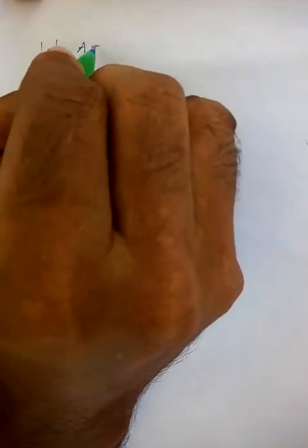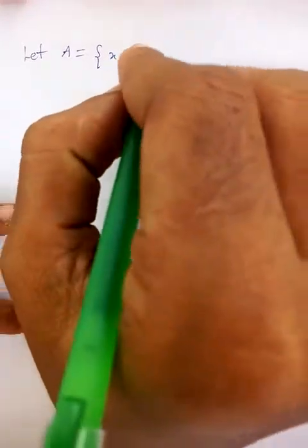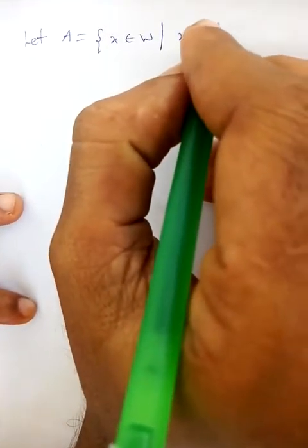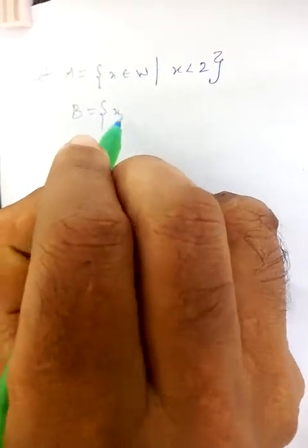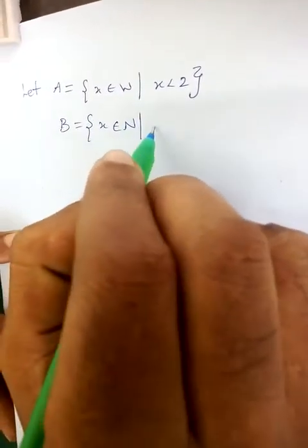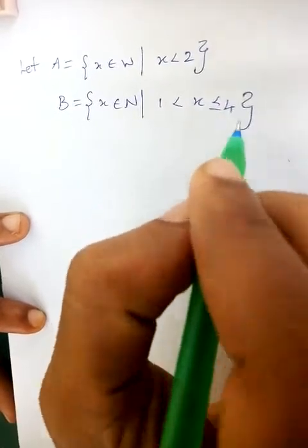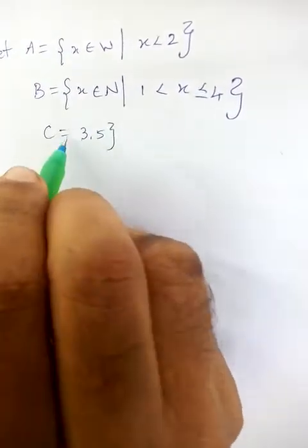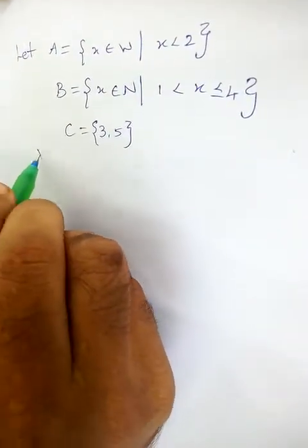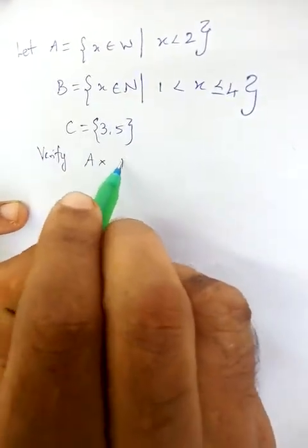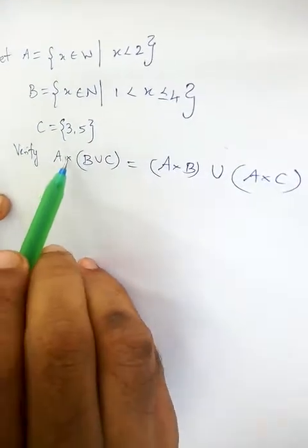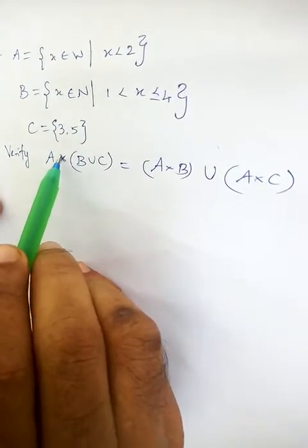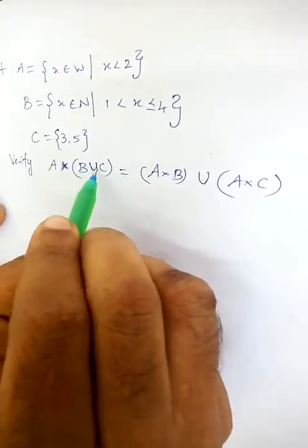Good morning friends. Here we are going to solve this question. Set A equals x where x is a whole number and also x should be less than 2. Set B is x where x should be a natural number with a range given. Set C is the set of 3 and 5. We have to verify A cross (B union C) equals (A cross B) union (A cross C) — it is a Cartesian product and union function.